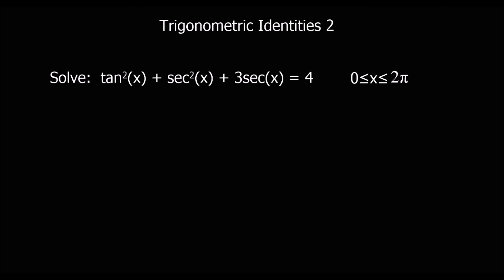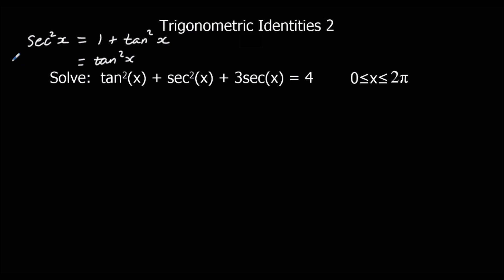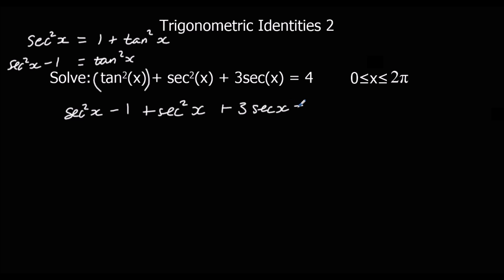Here's another question, similar to the last one — pause the video if you want to give it a go. This time we've got tans and secs. We need to get rid of the tan²x to make everything in terms of sec x. Using sec²x = 1 + tan²x, we get tan²x = sec²x − 1. Substituting in: sec²x − 1 + sec²x + 3 sec x = 4. Collecting like terms: 2 sec²x + 3 sec x − 5 = 0.